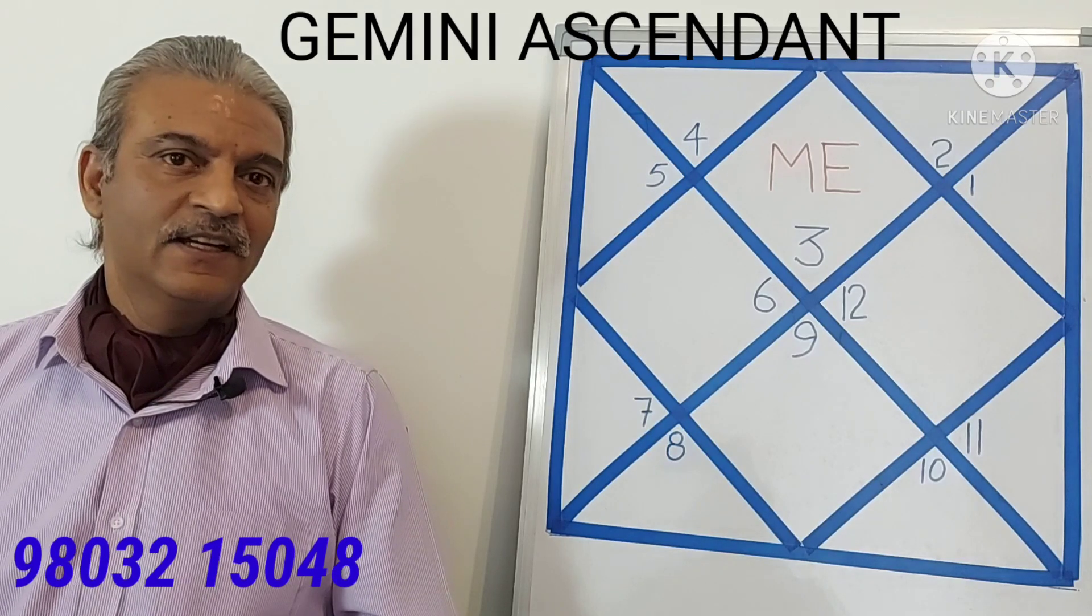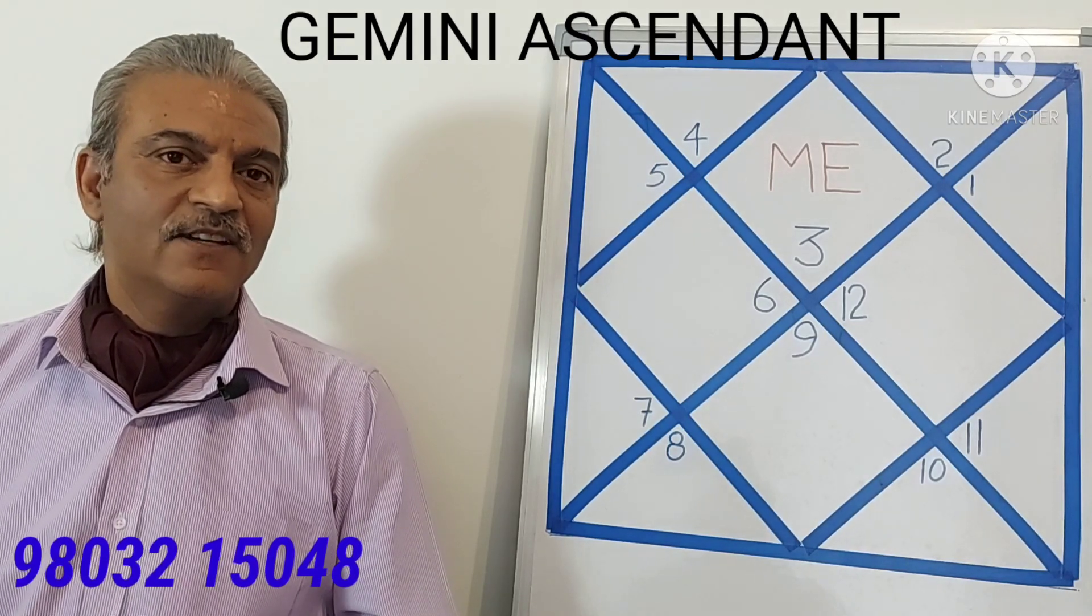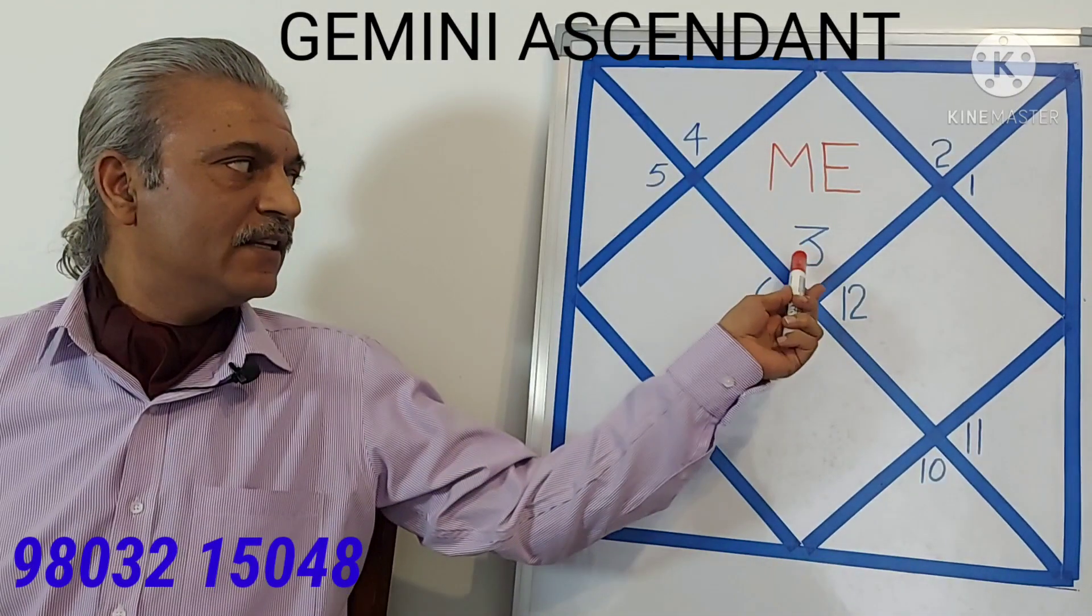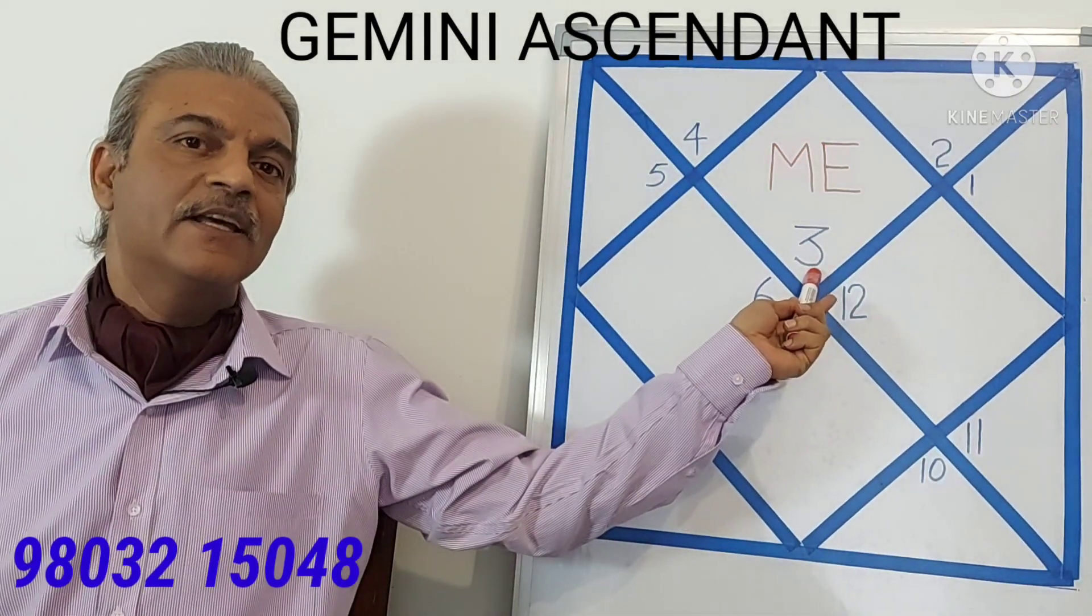Gemini is the third sign of the zodiac and so therefore in a horoscope with Gemini as ascendant, we will find that number 3 will be written in the first house.